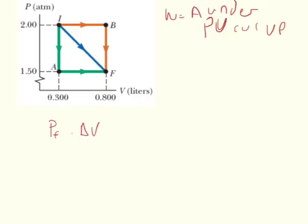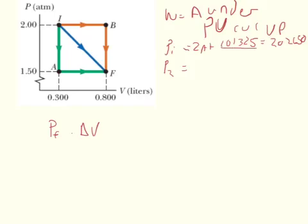Before we can do anything meaningful, we have to set up all of our conversions, because our pressures are given in atmospheres and our volumes in liters. To calculate joules, we need volumes in cubic meters and pressures in pascals. The initial pressure is 2 atmospheres, which multiplied by 101,325 gives 202,650 pascals. The final pressure is 1.5 atmospheres, which gives 151,989 pascals.